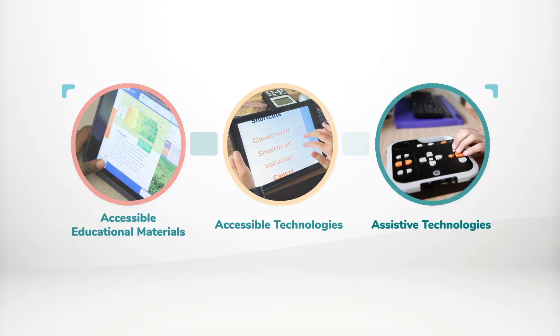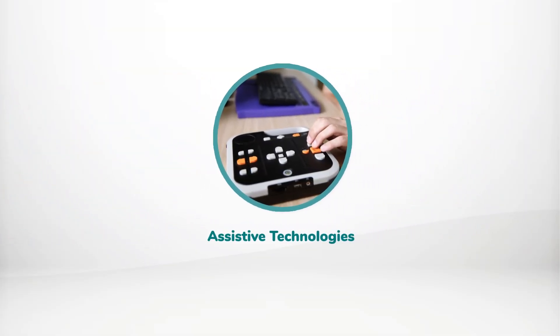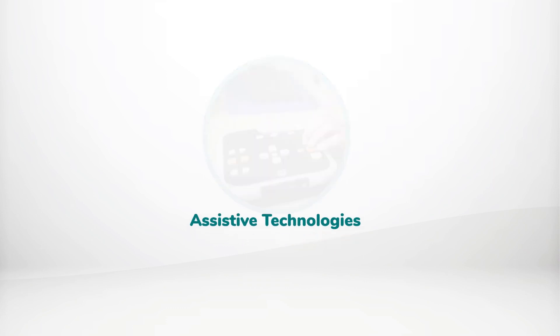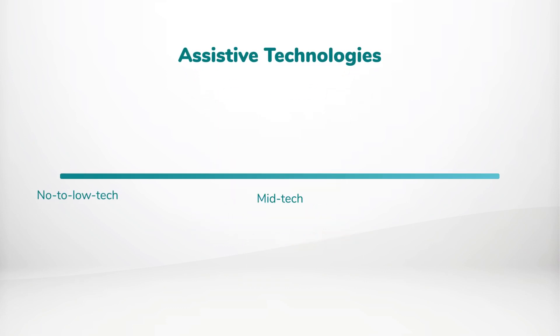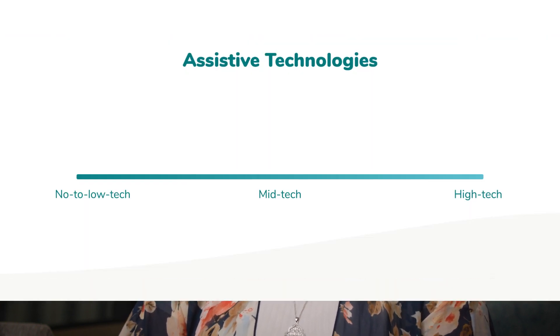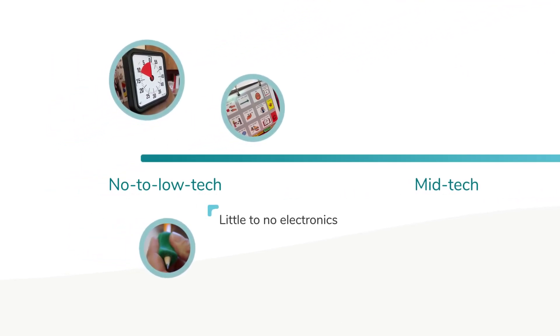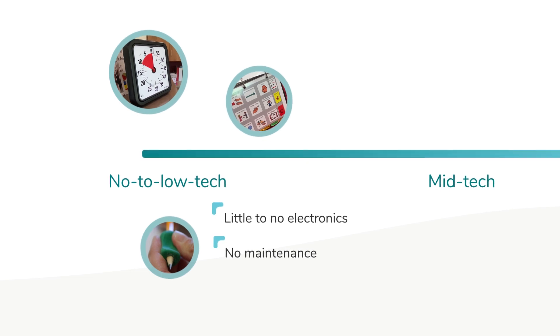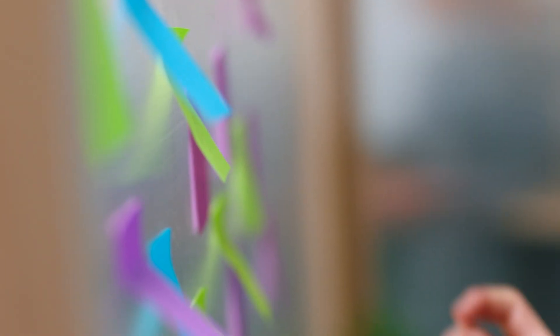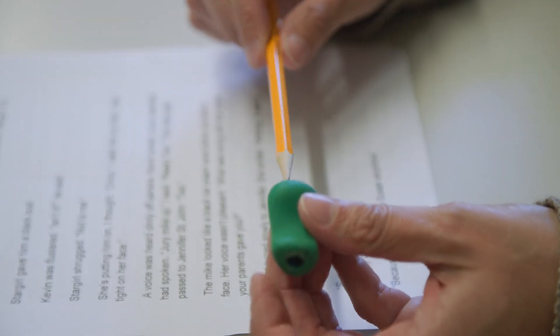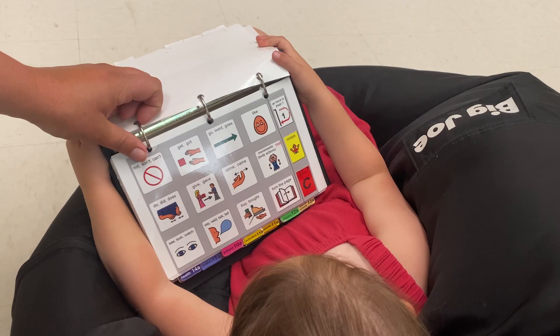Finally, we have assistive technologies, commonly known as AT. Assistive technologies fall on a continuum from no-tech to low-tech, mid-tech, all the way to high-tech. Along this continuum, assistive technologies are designed to address specific barriers that learners with disabilities may face when they interact with their learning. No-to-low-tech assistive technologies are items that include little to no electronics and require no maintenance. These are things like sticky notes as part of the work system, a pencil or stylus, timers, or communication boards or books.